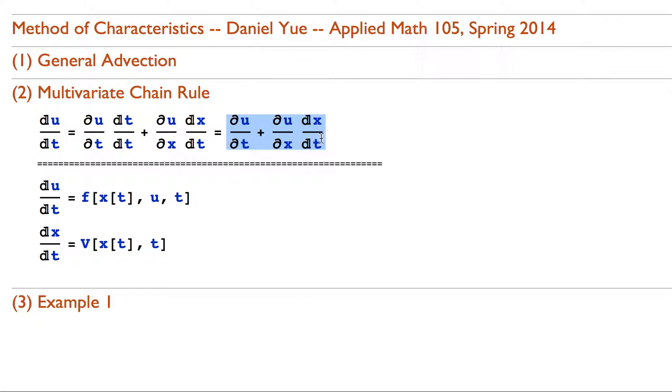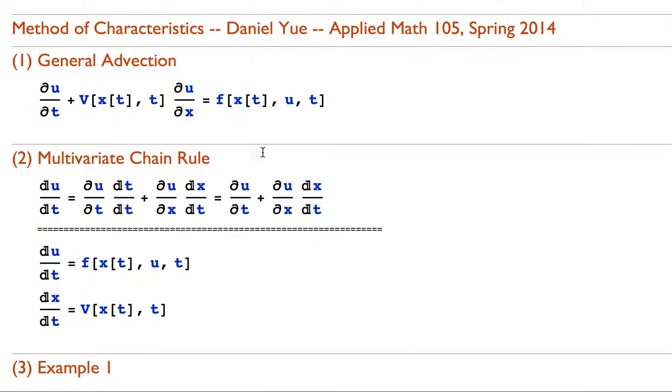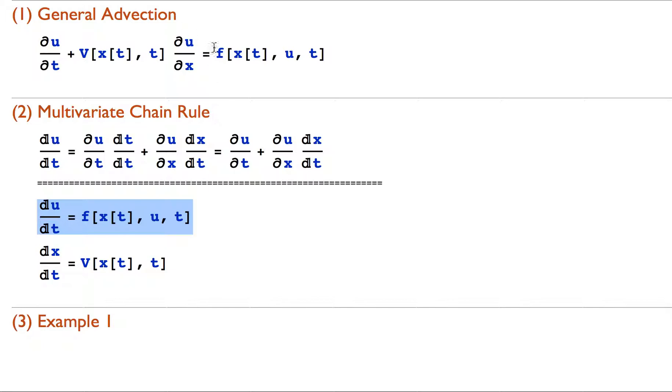But you'll notice by comparison with the problem from above, we can see that the full derivative of time matches up well with the left-hand side of this equation if we simply write that the derivative of x with respect to time is equal to this function V, which has arguments x and t, and the full derivative of u is equal to this function f. So I've written that down here and it's pretty easy to verify that just by matching up the form of this equation with this equation.